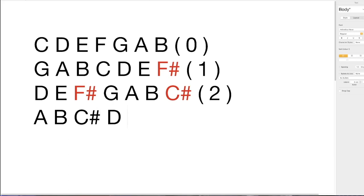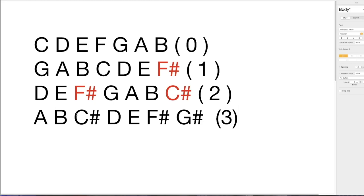Next, every letter of the alphabet is still present. A, B, C — very obvious here. D, E, F is already sharp from the previous scale, and then the last note, normally G, becomes G sharp — giving us three sharps. So A is the key with three sharps. To recap: G has one sharp, D has two, A has three.